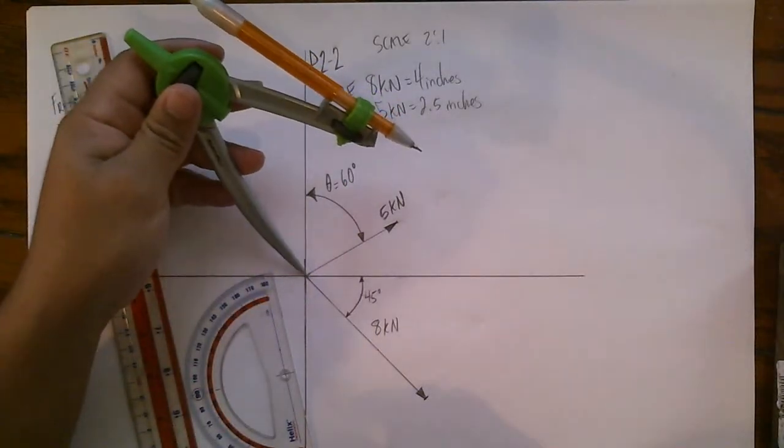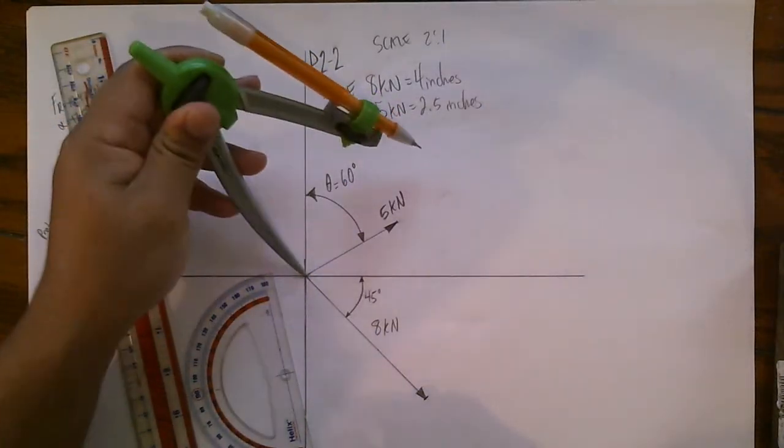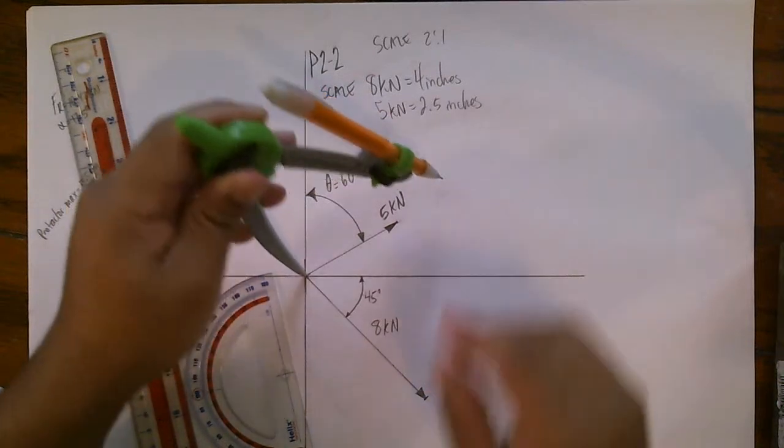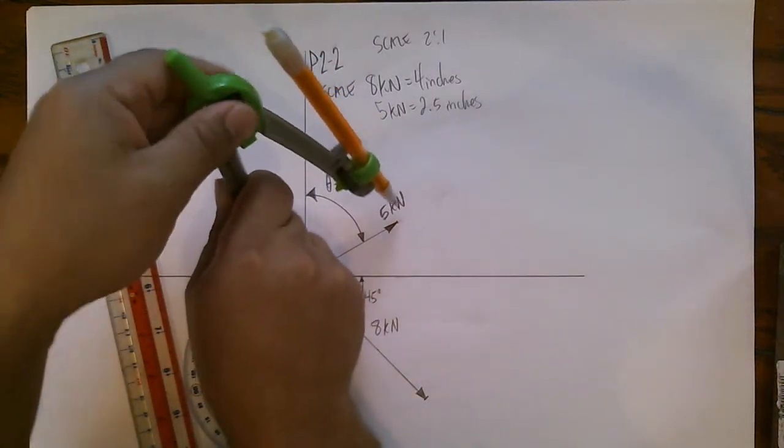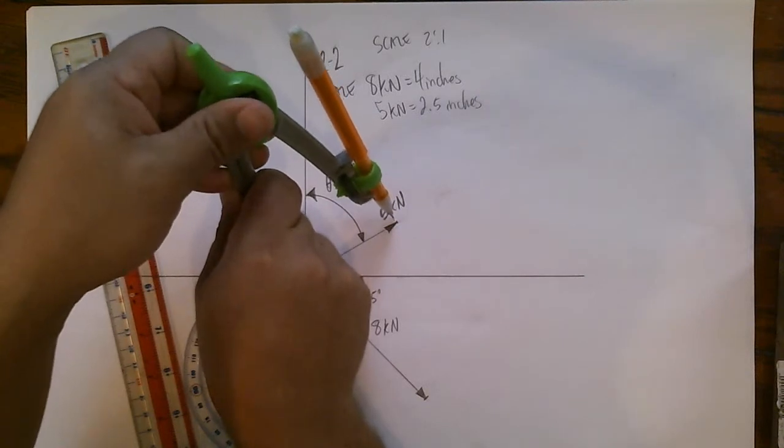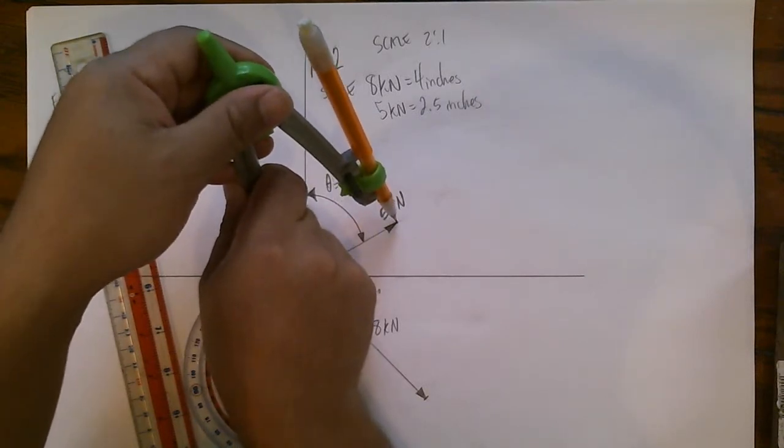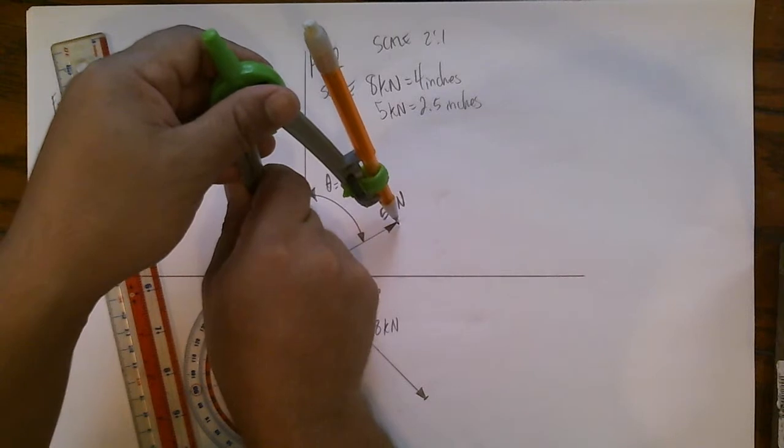So the first thing you do is you place it right here in the center, then you adjust your protractor to the tip of that 5 kilonewtons, right there.